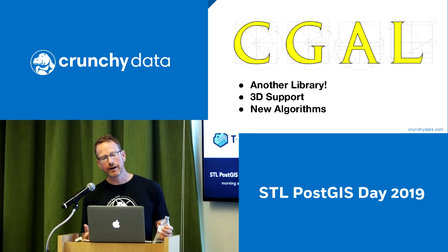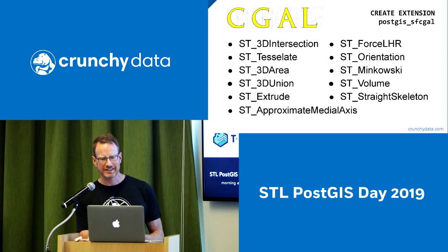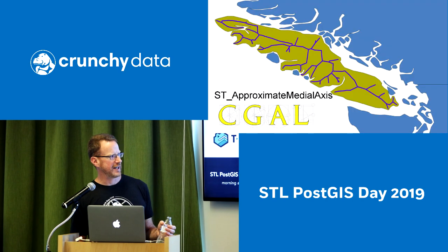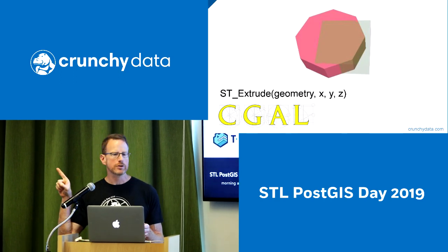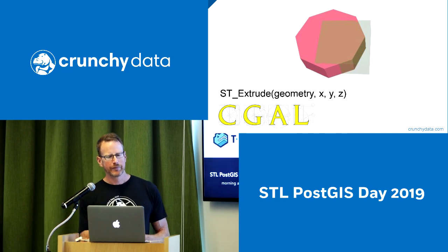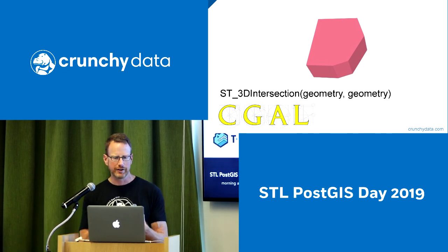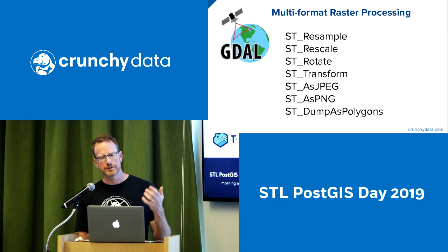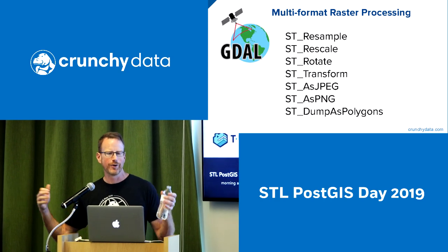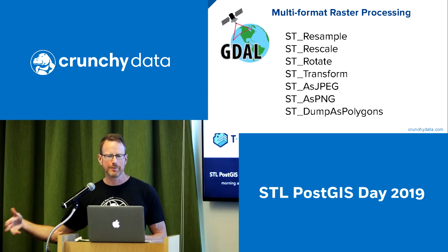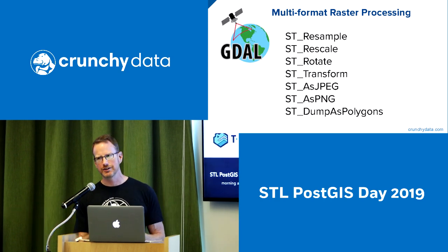We use SFCGAL primarily for volumetrics but also for other 3D calculations. For example, a straight skeleton: take any polygon and turn it into a linear representation of that polygon. Volumetric stuff: given a 2D shape and a vector of extrusion, turn it into a 3D volumetric shape. Standard operations for sets of volumetric data — intersect two volumetrics, union two volumetrics. GDAL is used primarily for raster data: you can take raster data, resample, rescale, rotate, convert it into viewable formats like JPEGs and PNGs, or vectorize it — take a shape with a mask and turn it into a set of vectors.